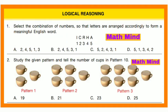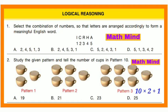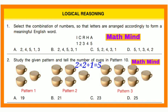2-4-5-1-3. Question No. 2: Study the given pattern and tell the number of cups in pattern 10. Pattern 1 has 3 cups, pattern 2 has 5 cups, pattern 3 has 7 cups — these increase by 2. The formula is: pattern number × 2 + 1. So pattern 10 = 10 × 2 + 1 = 21. Option B is correct.